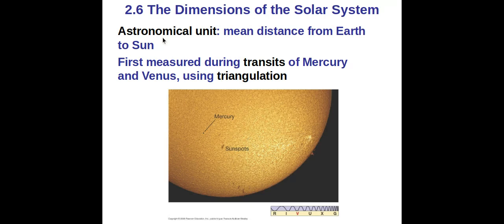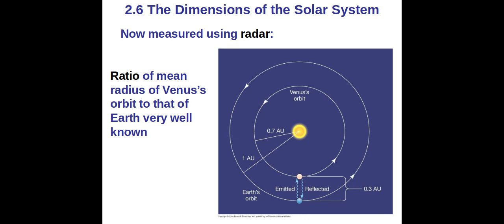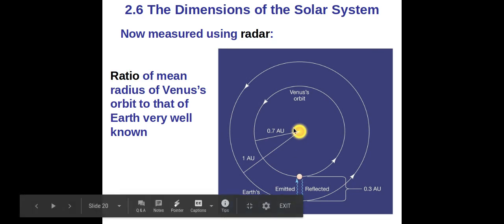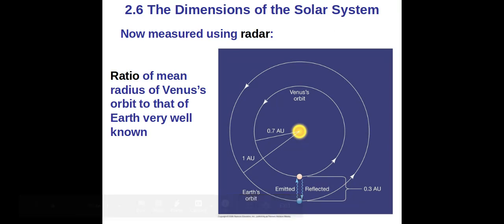This is important. One astronomical unit is the mean distance from the Earth to the sun. So basically the average distance from the Earth to the sun is what we call one astronomical unit, and that's how we tend to measure things in the solar system. Now we use radar to measure this and measure the amount of time it takes for the radar waves to bounce back.